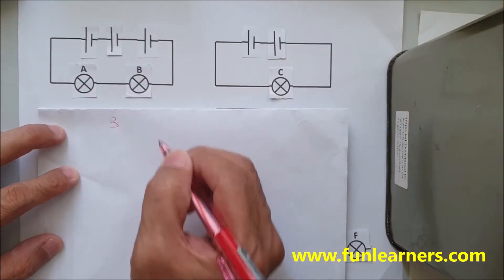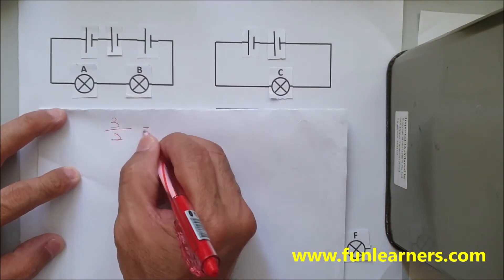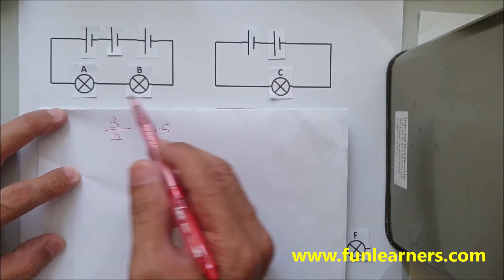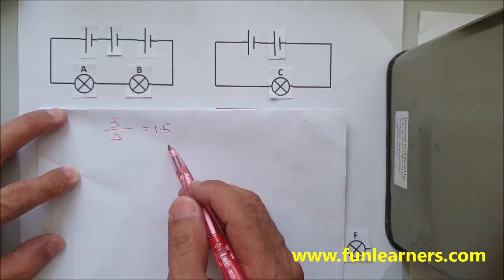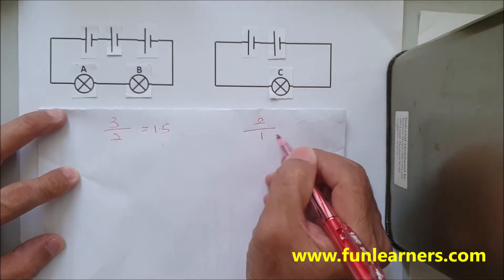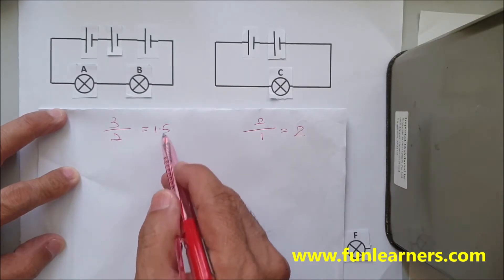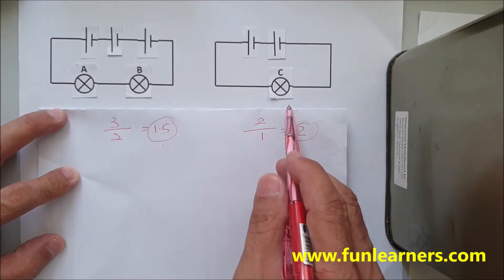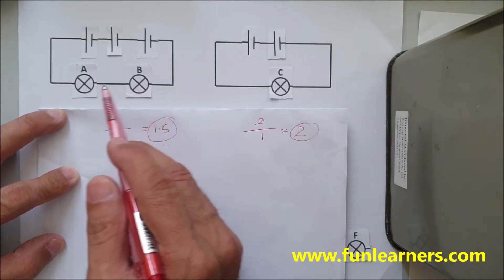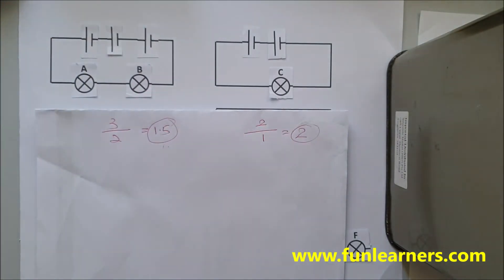Now we are at example three. We have three batteries divided by two light bulbs in between, so we get 1.5. The brightness of A and B are both 1.5. For the other circuit, there are two batteries divided by one bulb, so brightness is two. C is brighter than A and B, and A and B have the same brightness because they are on the same path under the three batteries.